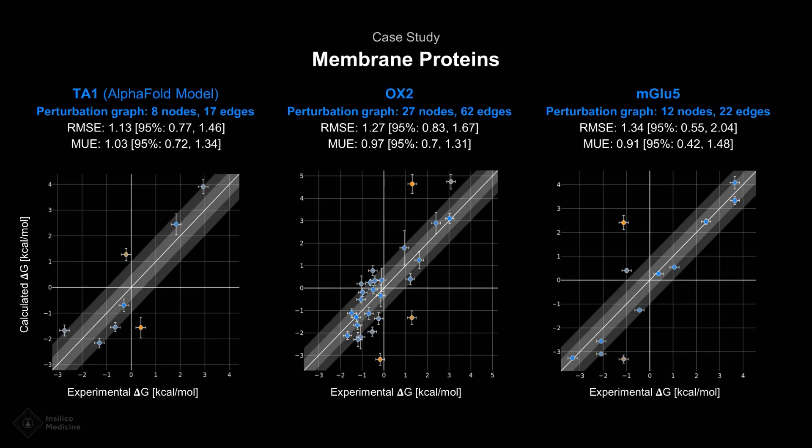To demonstrate Alchemistry's applicability, we conducted calculations for three GPCRs from the public benchmark: the trace amine-associated receptor, orexin receptor type 2, and metabotropic glutamate receptor 5. Our simulations showed a strong correlation between experimental and calculated values.